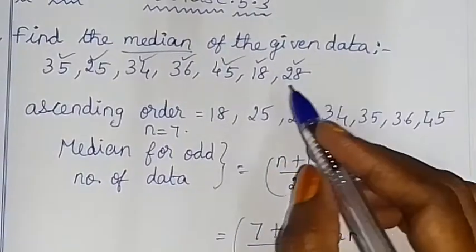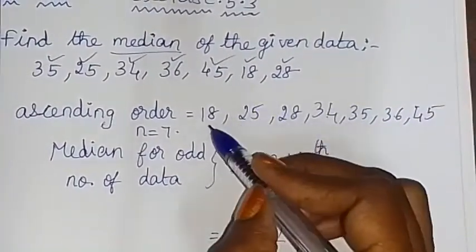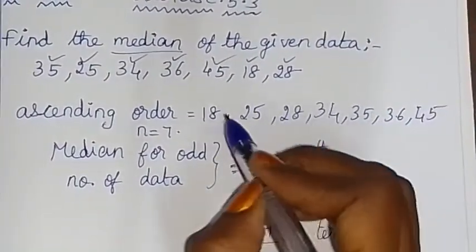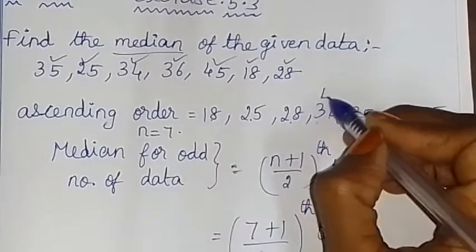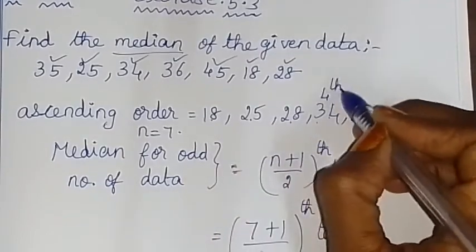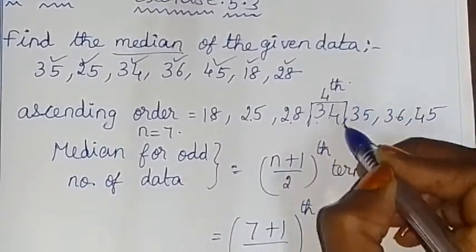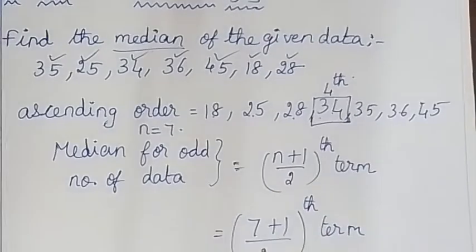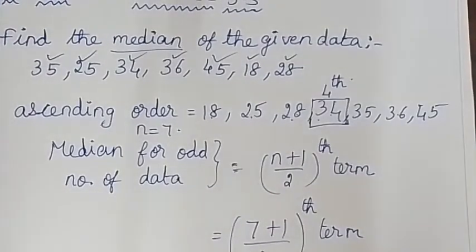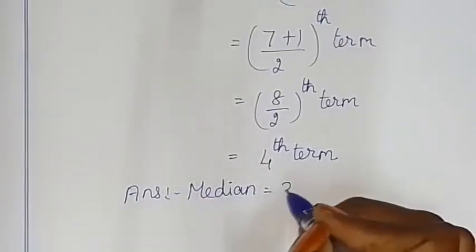Counting to the 4th term: 1, 2, 3, 4 — the 4th term is 34. So the median for the given data is equal to 34.